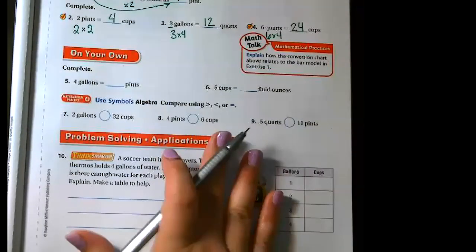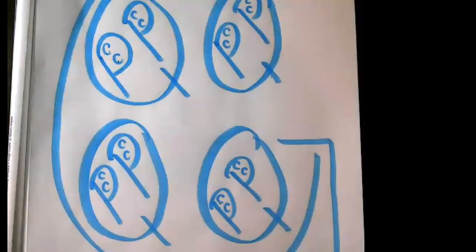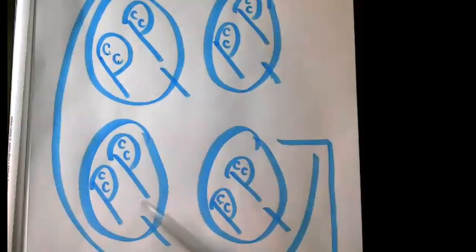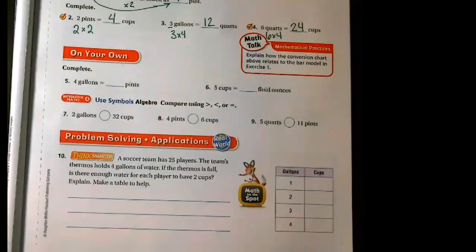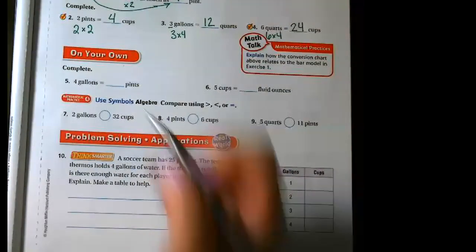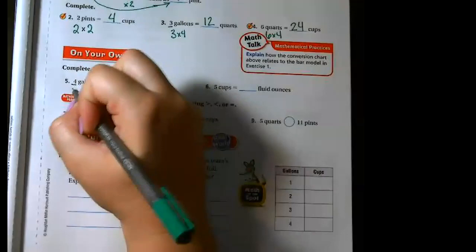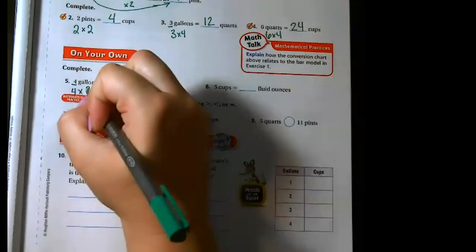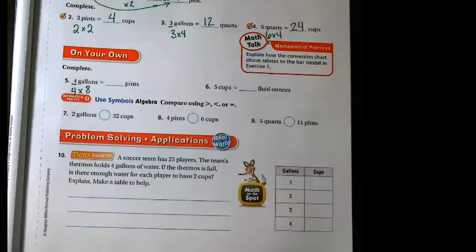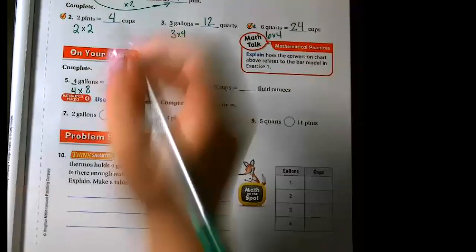On our next one, we're changing gallons into pints. When I look at my big G, how many P's are inside my whole picture? There are eight — one through eight. So I multiply my four gallons by the eight pints in each of them, and four times eight is 32.